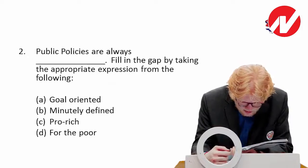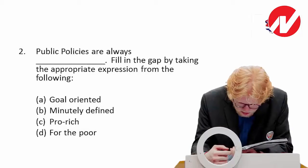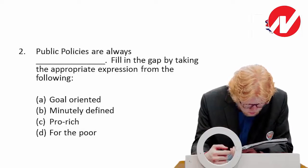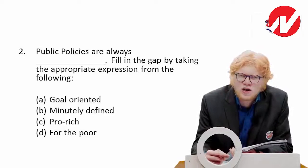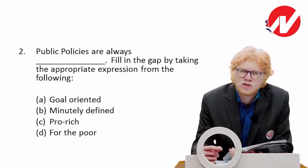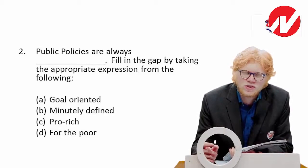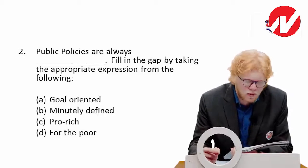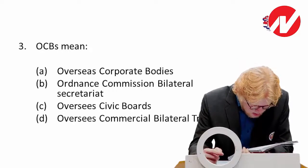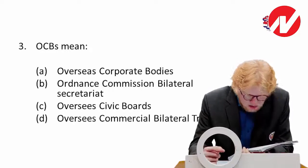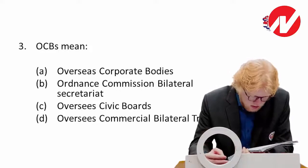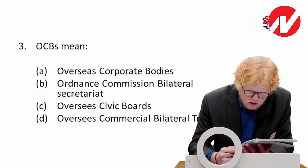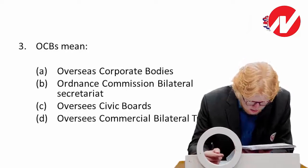Next: public policies are always — fill in the gap. Public policies are goal-oriented only; they are always framed for a specific goal, and to achieve that goal we make public policies. Next: OCBs — the full form is Overseas Corporate Bodies. Simple to understand.